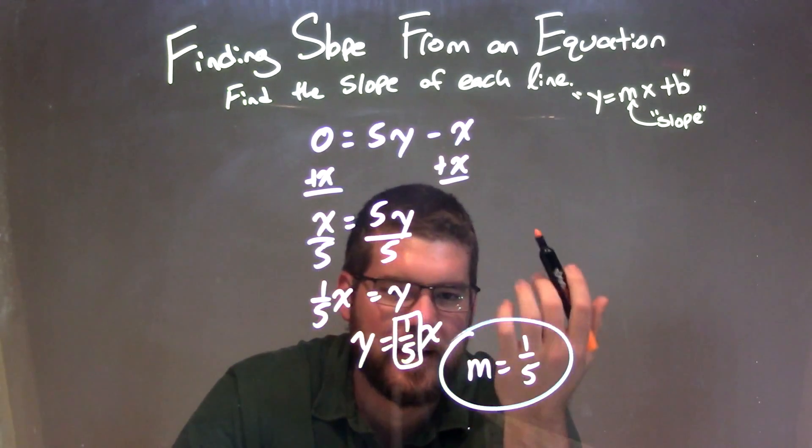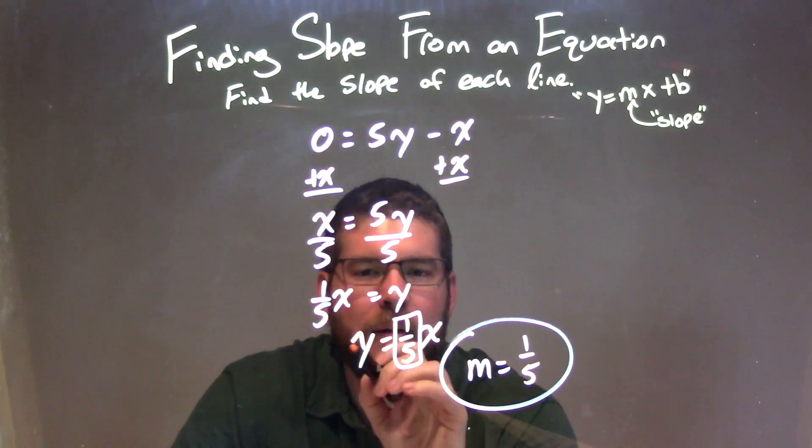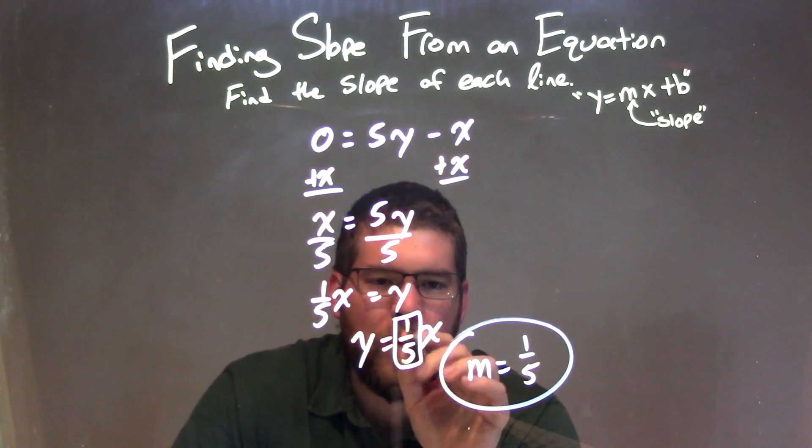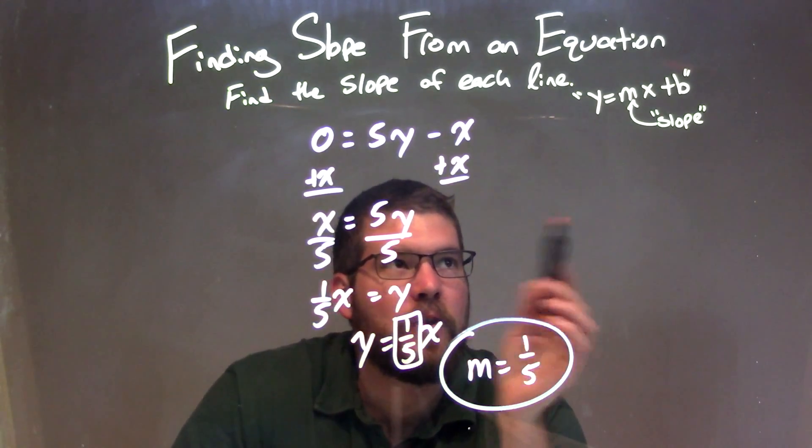It's a little easier to see. You probably can't tell what the slope is at that point, but I wrote y first. So now y equals 1/5 x. That is our slope intercept form.